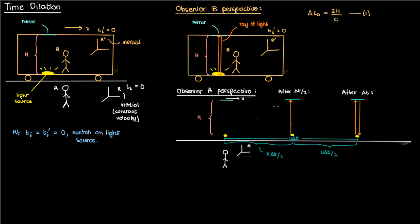In observer A's frame of reference: at time 0 the light ray comes off the source; at time delta_t/2 the light ray bounces off the mirror, with the source and mirror having traveled v*delta_t/2 horizontally; and at time delta_t the light ray returns to the source, with the source and mirror having again traveled v*delta_t/2 horizontally. So according to observer A, the light ray travels diagonally up to the mirror and then diagonally back down to the source.